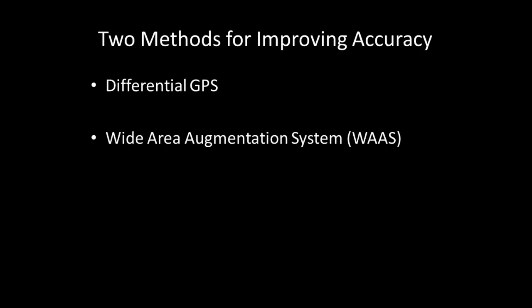Given the fact that there are many factors that can cause inaccuracy in GPS signals, methods have been developed for improving GPS accuracy. In the following slides, I describe two of those methods, differential GPS and wide area augmentation system, or WAAS.